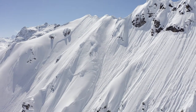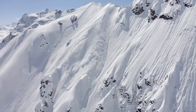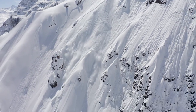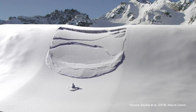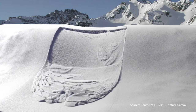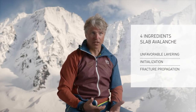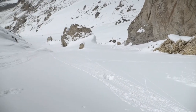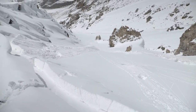The second thing we need is a skier, or the stress element — the initiation, as it is referred to — so someone who triggers the slab. The third thing we need is the ability of the slab to propagate the crack in the weak layer. This way the slab gets really big and can release in one go.